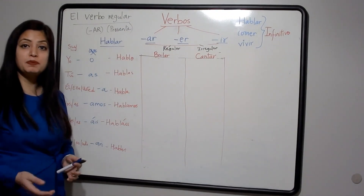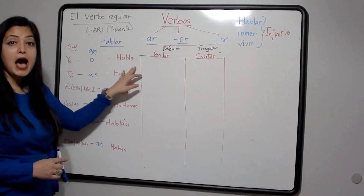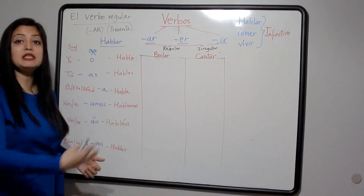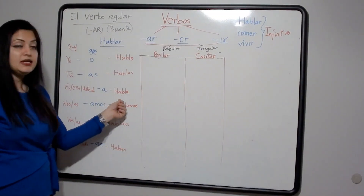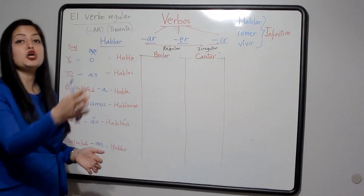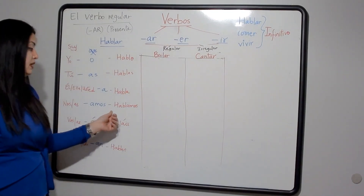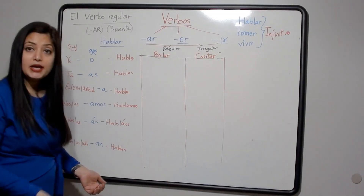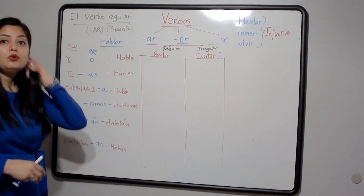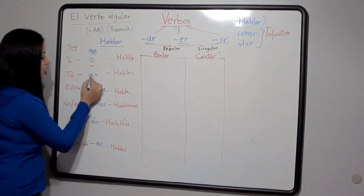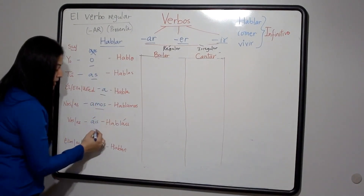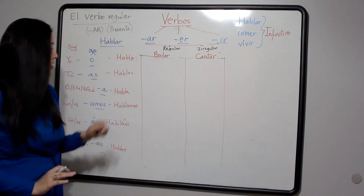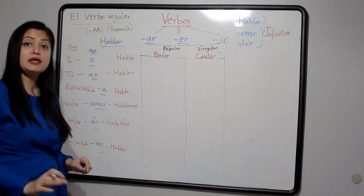Hablar in itself means 'to speak,' but when I say hablo, it means 'I speak.' Hablas means 'you speak.' Habla means 'he, she, or you (formal) speaks.' Hablamos means 'we all speak.' Habláis means 'you all speak.' Hablan means 'they all speak.' Notice that none of these endings are the same, so hablo can only mean 'I speak' and hablas can only mean 'you speak' — there is no scope for confusion about which subject we are talking about.